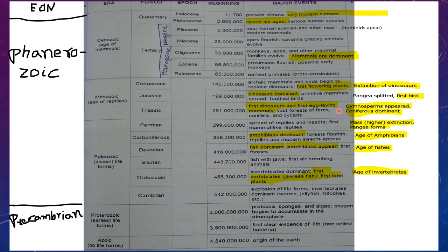Next is Jurassic. In Jurassic, dinosaurs are dominant — this is the golden age of dinosaurs. You can relate it to the Jurassic Park movie. Primitive mammals spread, toothed birds appeared, Pangea split, and the first bird evolved. So you have to remember: golden age of dinosaurs and first bird in Jurassic.